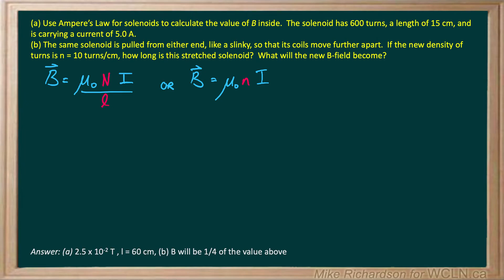Using Ampere's law for solenoids to calculate the magnetic field B inside the solenoid. We've got two equations for magnetic fields inside solenoids. One is B equals mu naught NI over L, and the other version is B equals mu naught nI. Notice the n over L and the little n are both in pink because they represent the same thing.